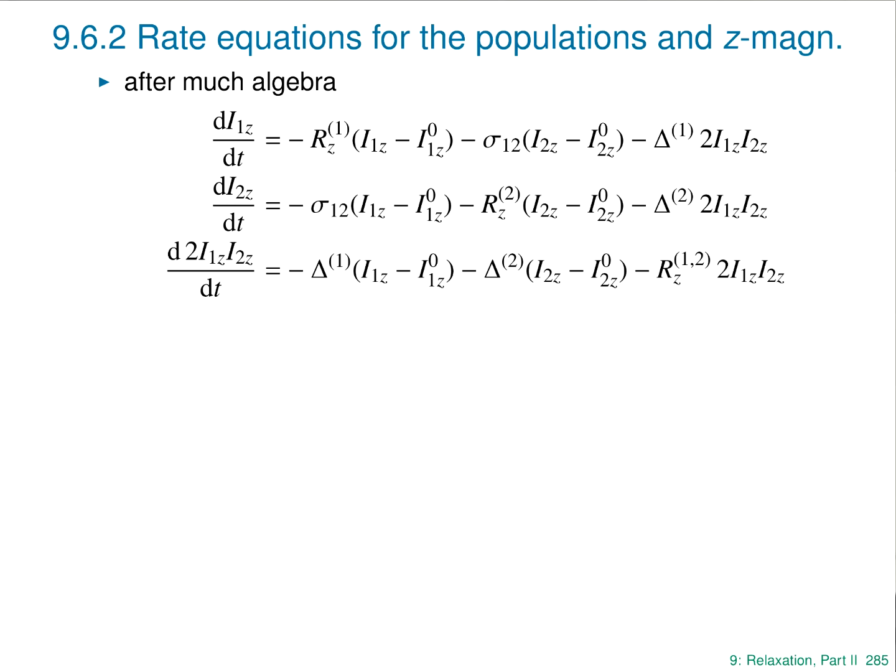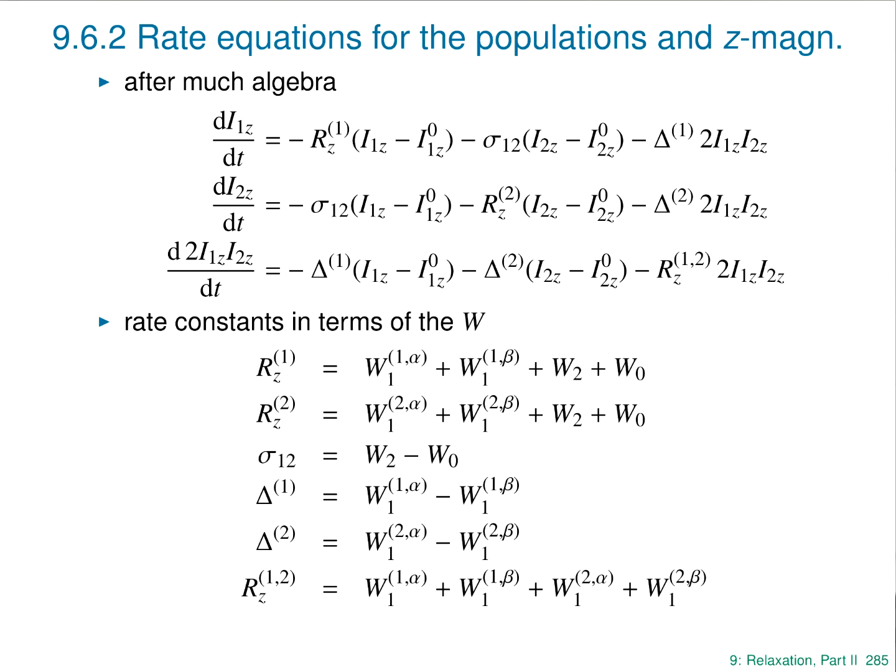Looking at the first Solomon equation, the rate of change of I1Z — the magnetization on spin 1 — has a term that depends on the magnetization of spin 1, a term that depends on the magnetization of spin 2, and a term that depends on the difference magnetization 2I1Z·I2Z. And likewise for I2Z. The rate constants R, sigma, and delta can all be related to the W values. This casts the problem in terms of magnetization on spin 1 and spin 2, which is more natural.